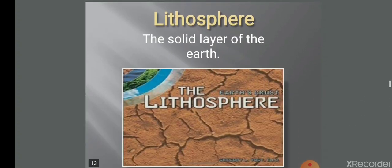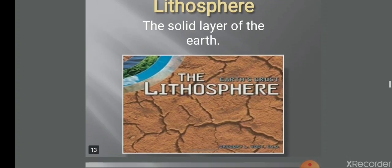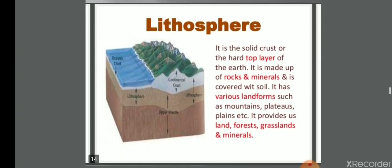Lithosphere means sphere of land. The solid layer of the earth is known as lithosphere. It is the solid crust or the hard top layer of the earth. It is made up of rocks and minerals and is covered with soil. It has various landforms such as mountains, plateaus, plains, etc. It provides us land, forests, grasslands, and minerals.